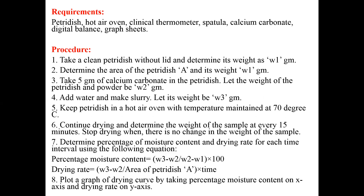The procedure step by step: First, take a clean petri dish and determine its weight, recorded as W1 grams. Second, determine the area of the petri dish, denoted as A. Third, take five grams of calcium carbonate in the petri dish and record the combined weight as W2 grams. Fourth, add some water to make a slurry and weigh the slurry, recorded as W3 grams.